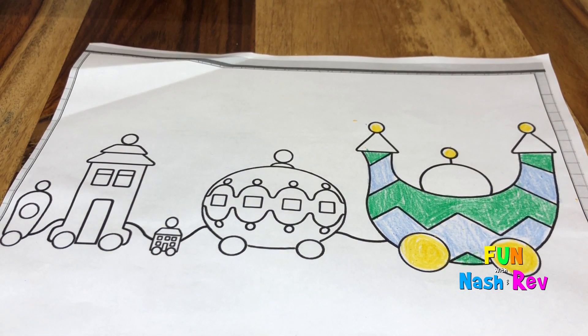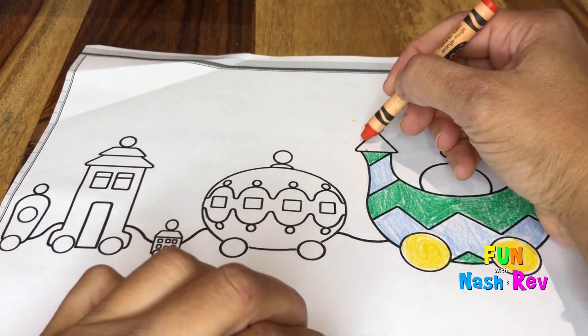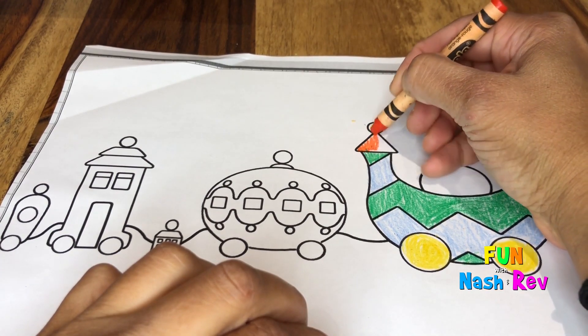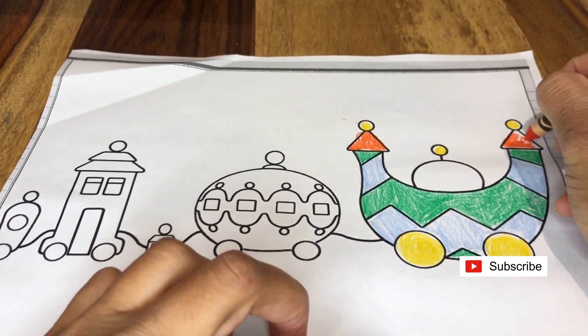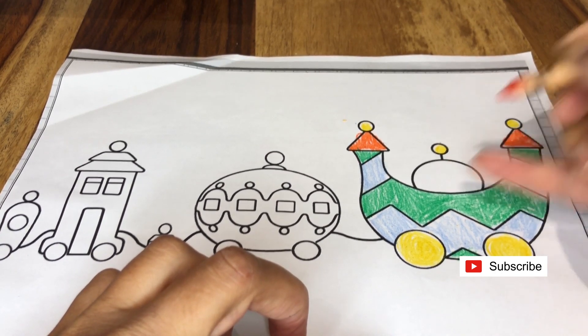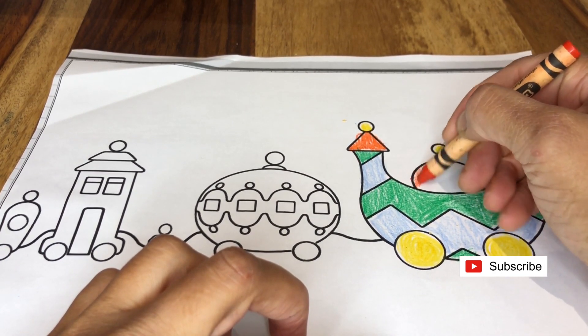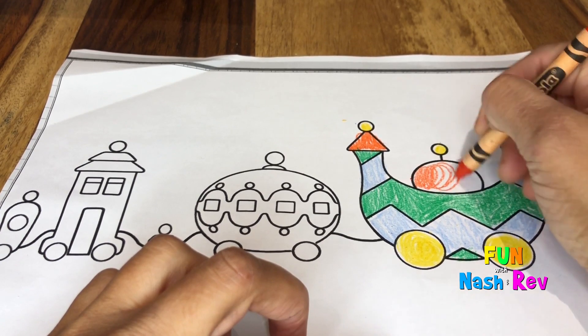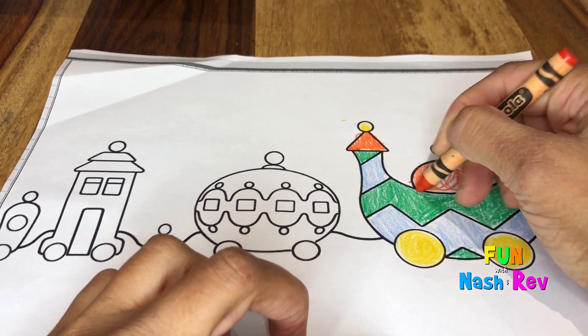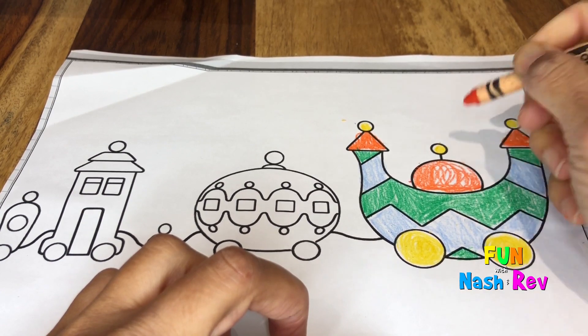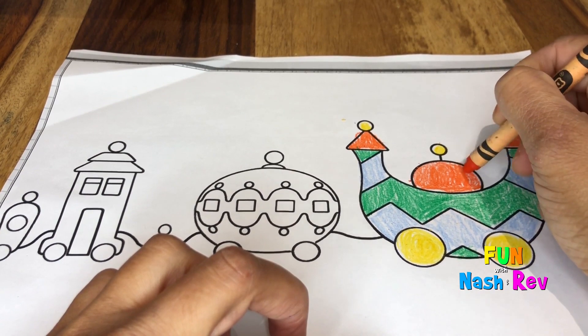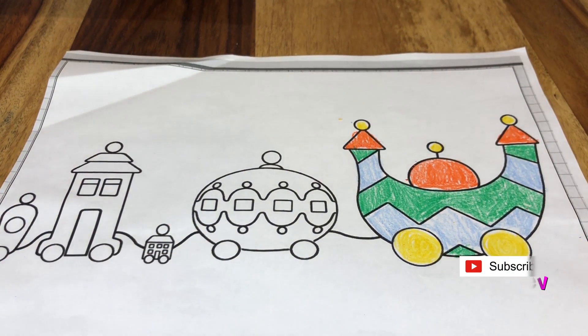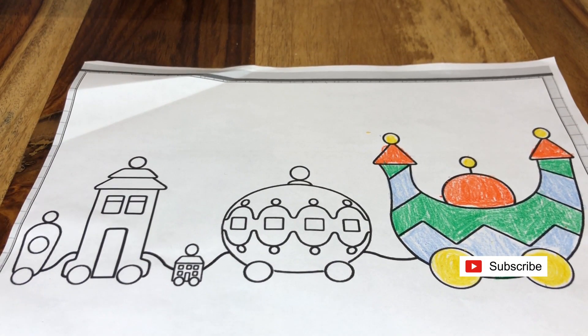And look at these triangles. I'm going to color them orange, orange triangles. Let's do this part orange too. There, that looks so cool.